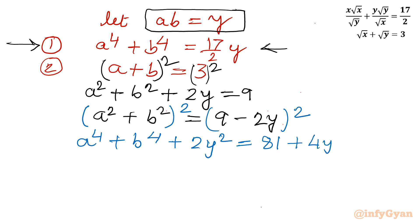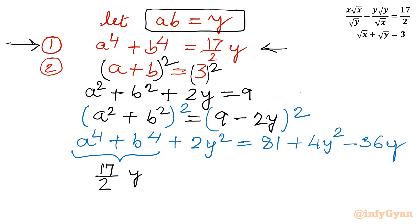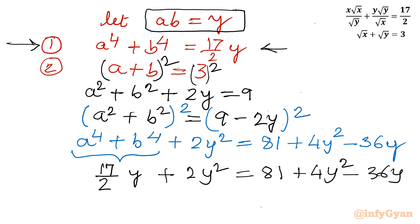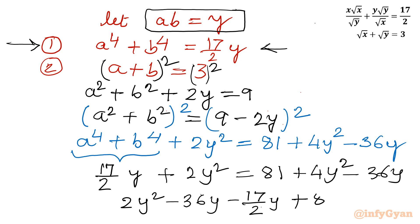Expanding: (9 − 2y)² = 81 − 36y + 4y². Now substituting a⁴ + b⁴ = (17/2)y, we write (17/2)y + 2y² = 81 + 4y² − 36y. Collecting all terms to the right-hand side: 2y² − 36y − (17/2)y + 81 = 0.